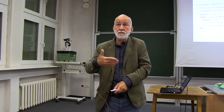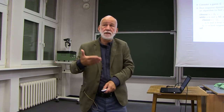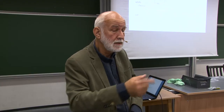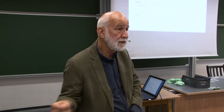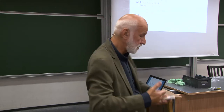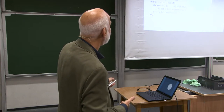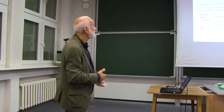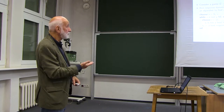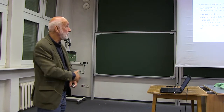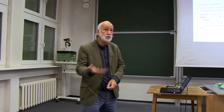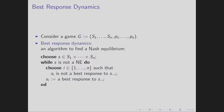We get a new joint strategy. Again we ask: is this Nash Equilibrium? We check if all players are satisfied. If not, we repeat. This is exactly what the algorithm is. Best response dynamics: you start anywhere, check — if it is not Nash Equilibrium, choose a player who is not happy, let him play a best response, and continue. It's really trivial. Now we can ask ourselves: is this any good?